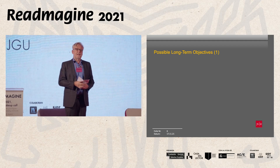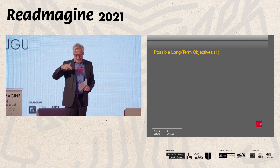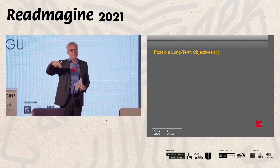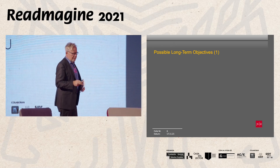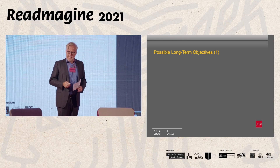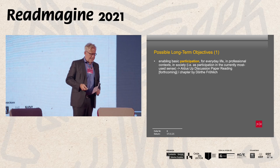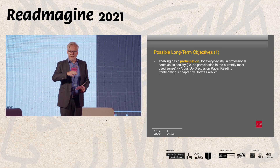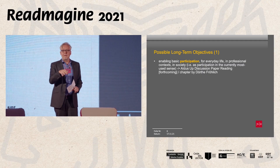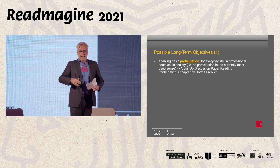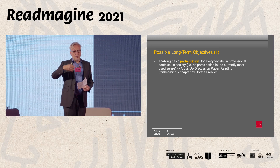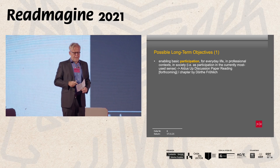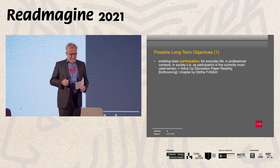I assume that reading policies want to achieve something with future readers — to achieve objectives in life. These long-term objectives we have researched and put into a table. One, mentioned by Anne, is enabling basic participation, which is pretty close to alphabetization — not the same thing, but pretty close. The desired long-term effect of reading can be that you are able to navigate in everyday life, in professional contexts, in society.